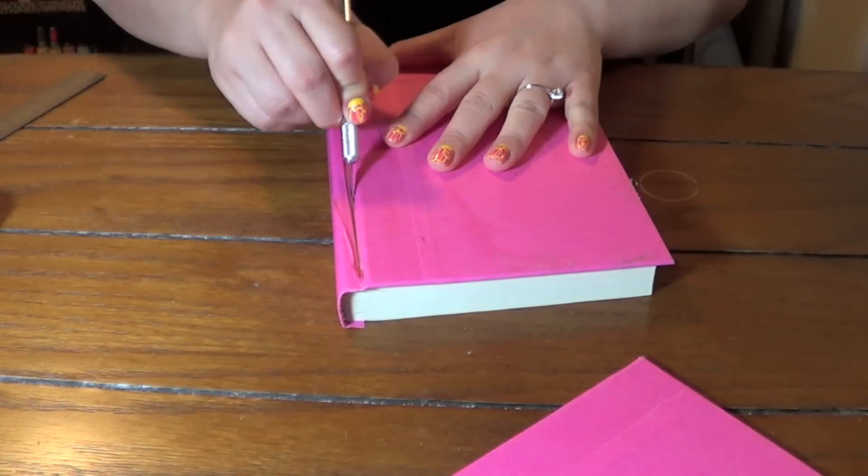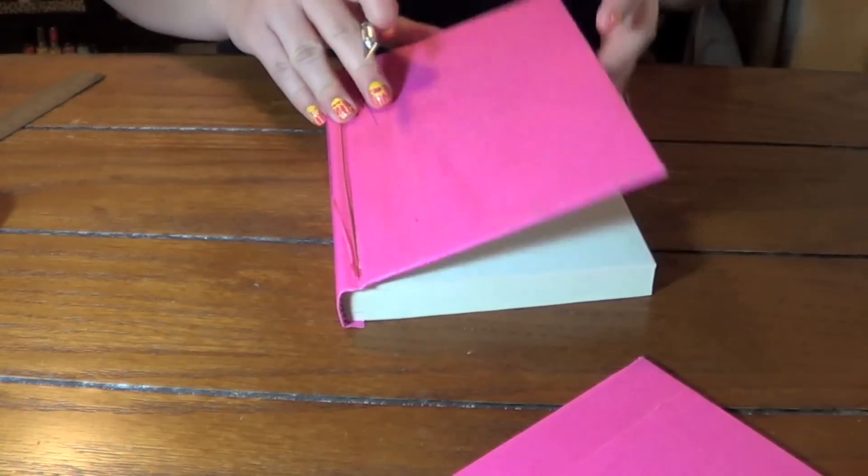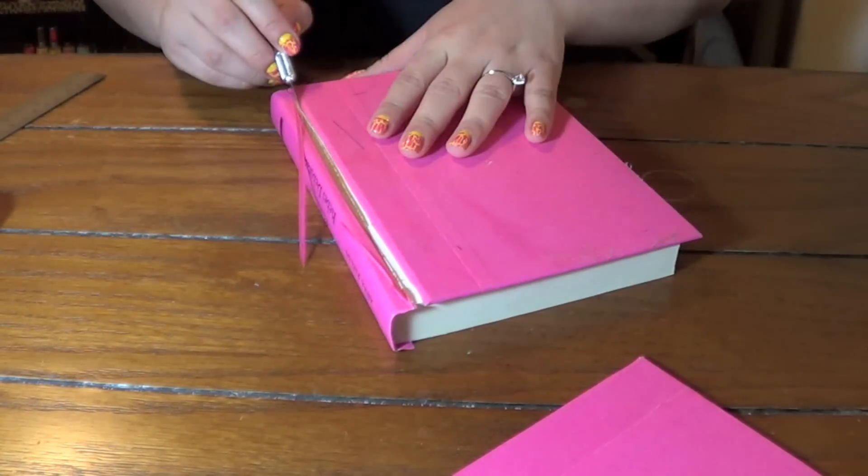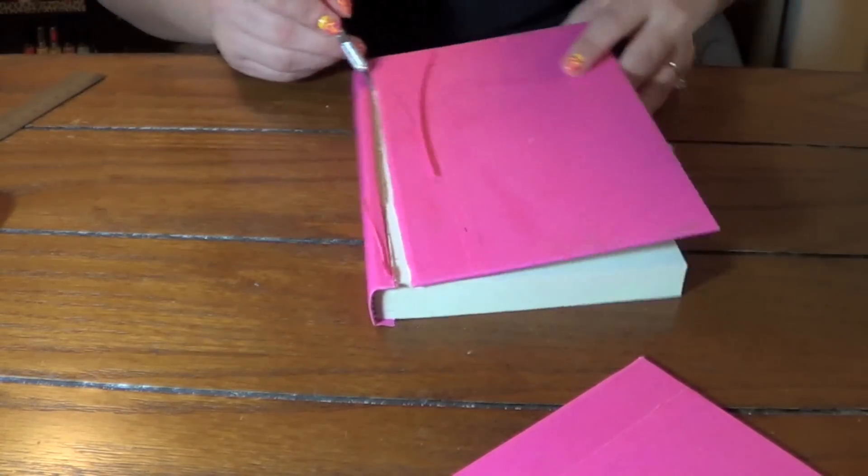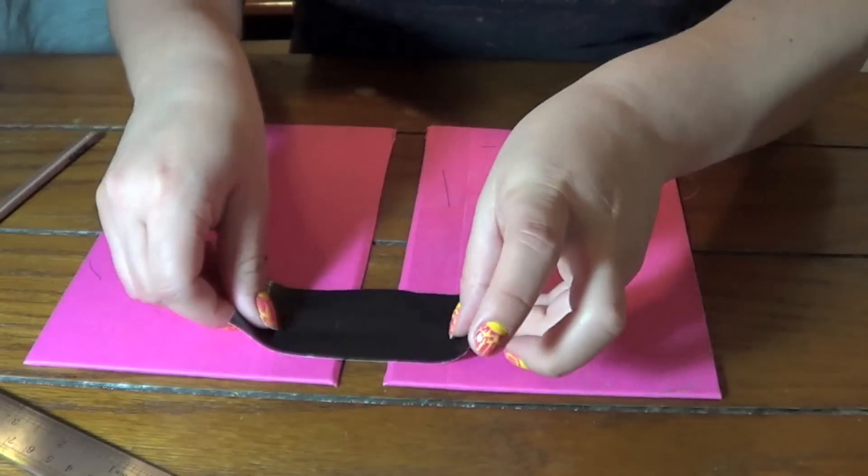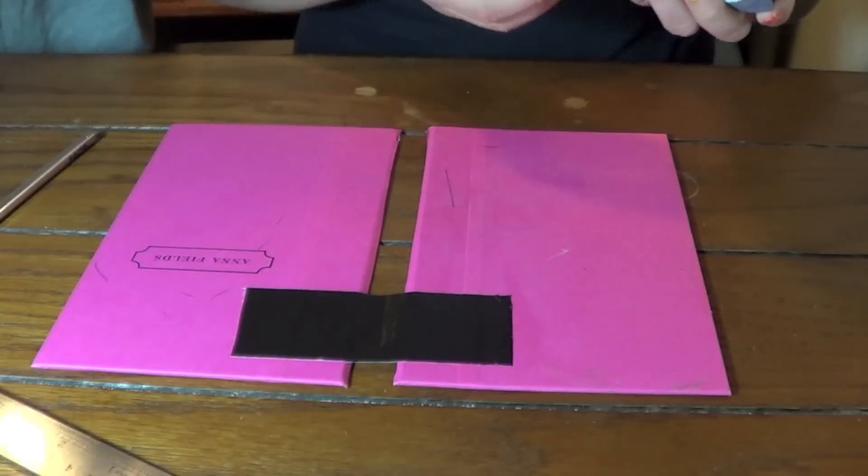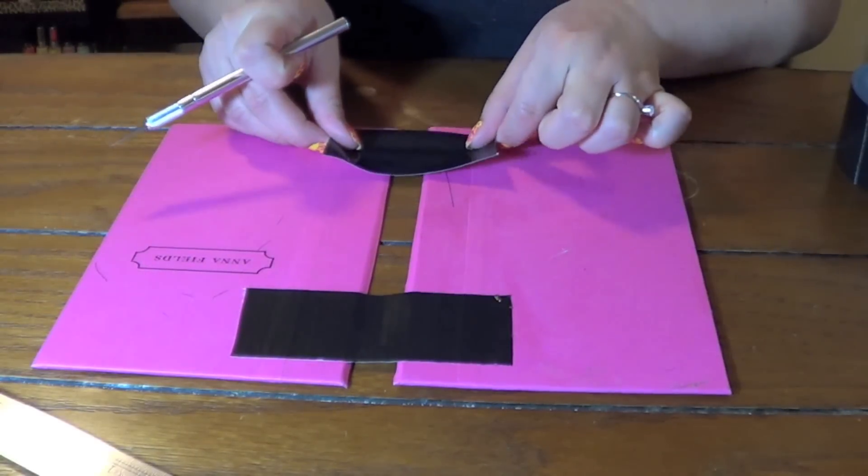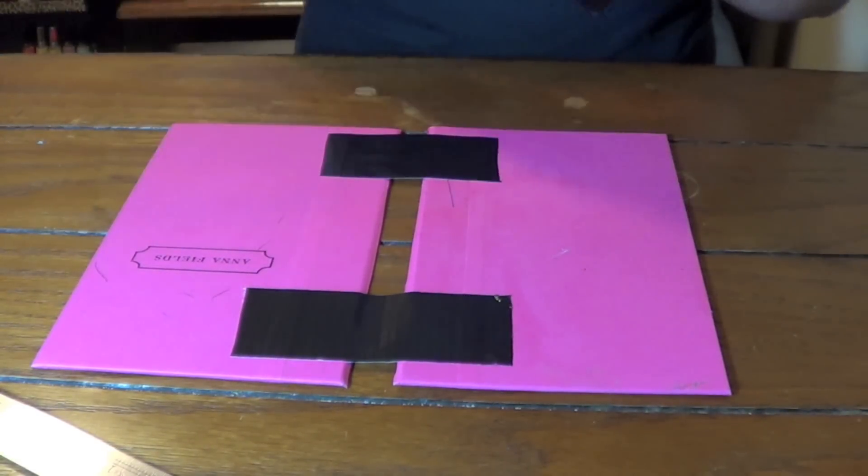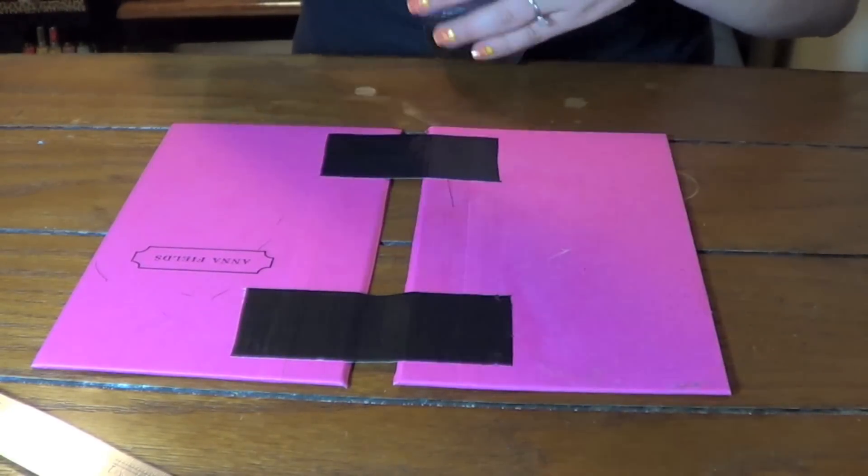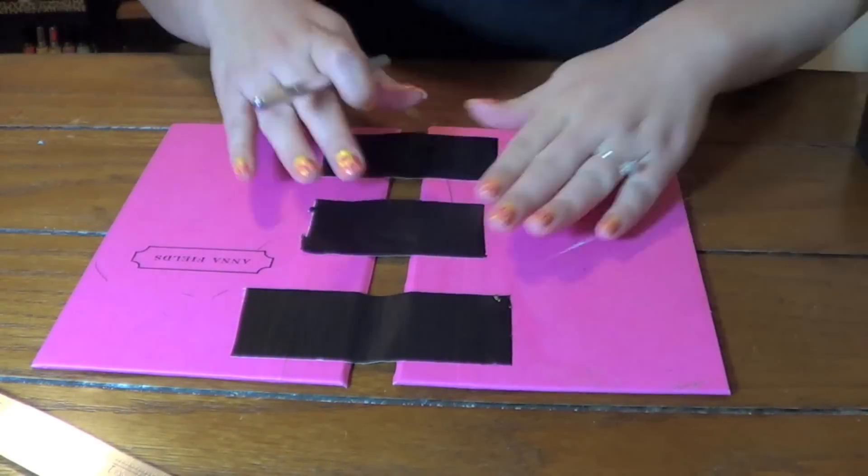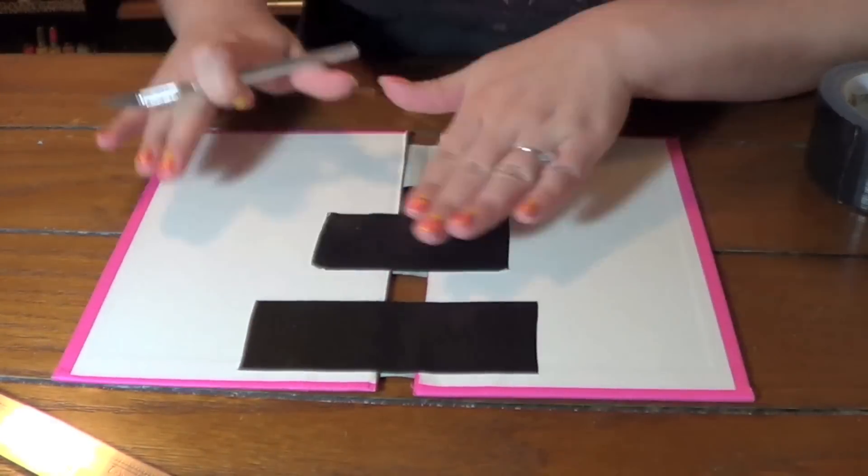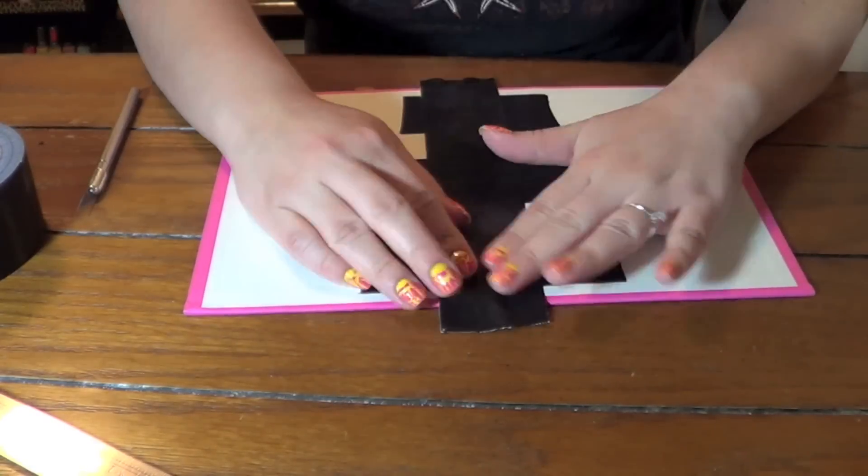So if you don't have an exacto knife, you can also use a box cutter knife, anything sharp will work. So these hardcover flaps, you don't want them too far apart and you also don't want them crooked. You want to make sure that the foam board will fit in between. It doesn't matter if your duct tape strips are long or short, just as long as they're on there.